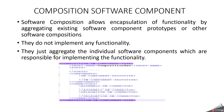Composition software component is a non-atomic software component. It offers logical connections between software components, either atomic or composition. It allows encapsulation of functionality by aggregating existing software component prototypes or other software compositions. It does not implement any functionality itself — it just aggregates individual software components which are responsible for implementing the functionality. It has connectors like assembly connector and delegation connector, which we will discuss in more depth in a separate video.